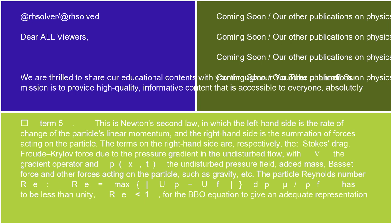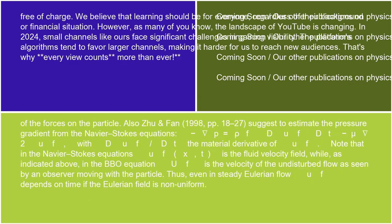Basset force, and other forces acting on the particle, such as gravity, etc. The particle Reynolds number R_e = max(|u_p - u_f|d_p/(μ/ρ_f)) has to be less than unity (R_e < 1) for the BBO equation to give an adequate representation of the forces on the particle.